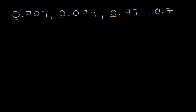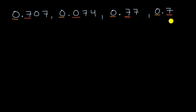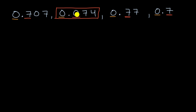We can move to the tenths place. The first number has seven tenths, the second number has zero tenths. So just from that, we know the second number is less than the first — it doesn't matter what's happening in the places to the right of that. The third and fourth numbers also have seven tenths. So the second number is the smallest of the four. They all have zero ones, but this one also has zero tenths. I'll list that first: 0.074.